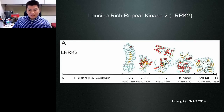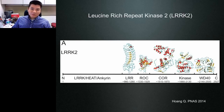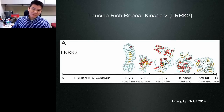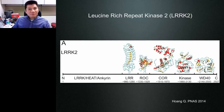Instead of focusing on the kinase domain, we decided to focus on the GTPase domain — the ROC domain. Based on the arrangement of the domains, we hypothesized that the activity of the ROC domain regulates the activity of the kinase domain. The idea is that if we can modulate the regulator of kinase activity, we might find unique and specific modulators of LRRK2 kinase activity. That was the rationale behind our focus on the ROC domain.